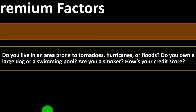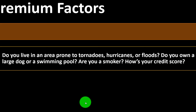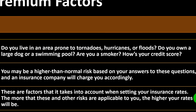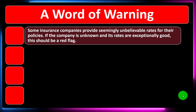Premium factors: Do you live in an area prone to tornadoes, hurricanes, or floods? Do you own a large dog or swimming pool? Are you a smoker? How's your credit score? These are all questions the insurance company will ask, and your answers affect your rates. Living in a tornado-prone area, owning a dog, having a swimming pool, or smoking will increase the amount you pay. You may be a higher-than-normal risk based on your answers, and an insurance company will charge you accordingly. The more these and other risk factors apply to you, the higher your rates will be.